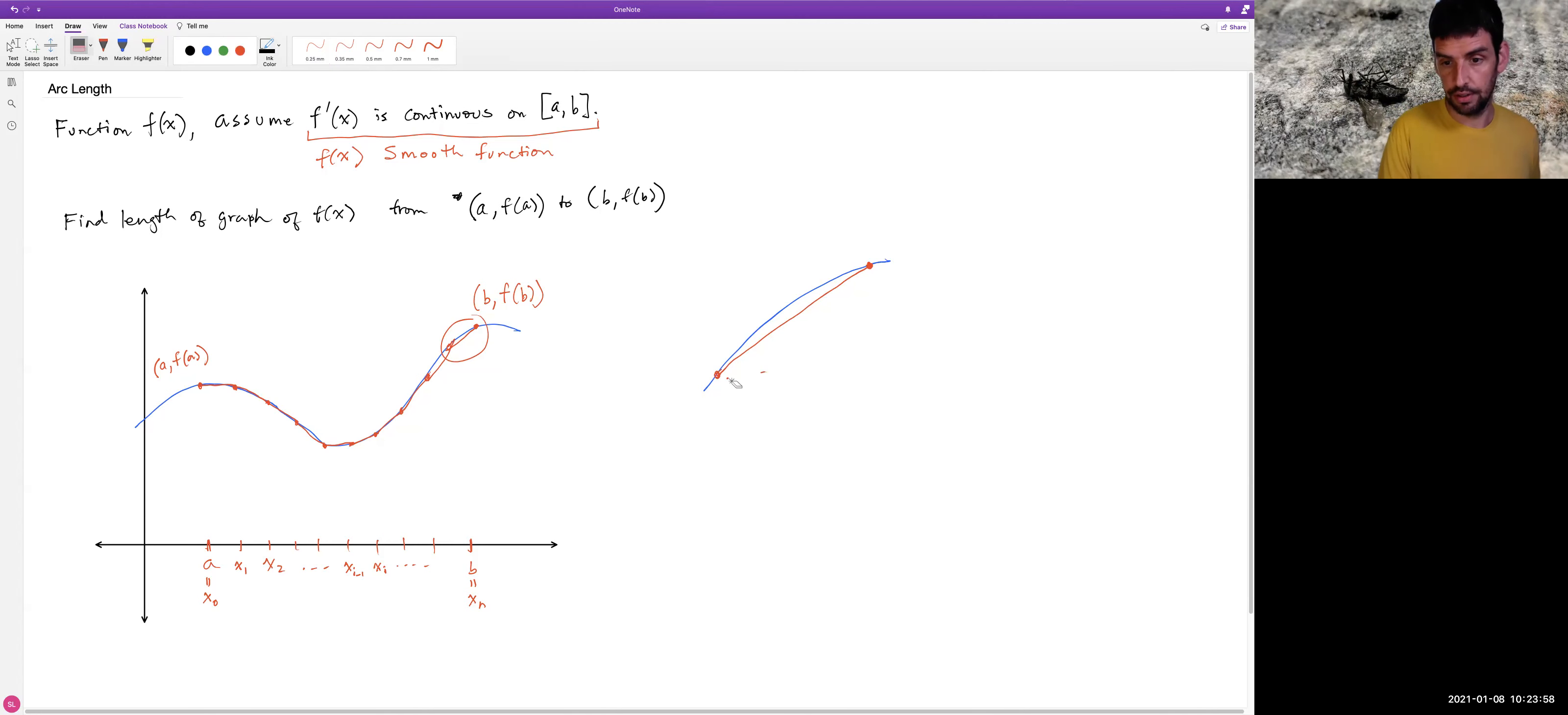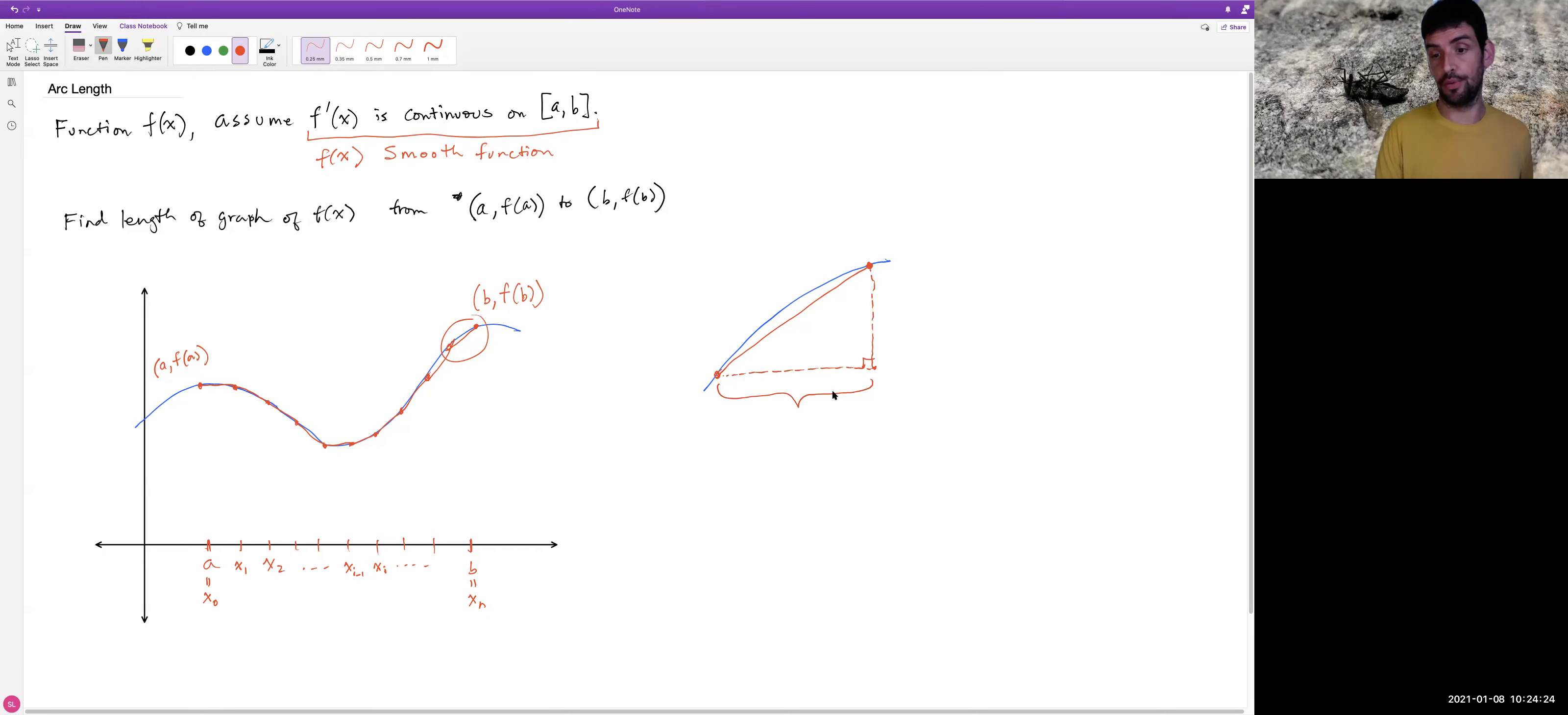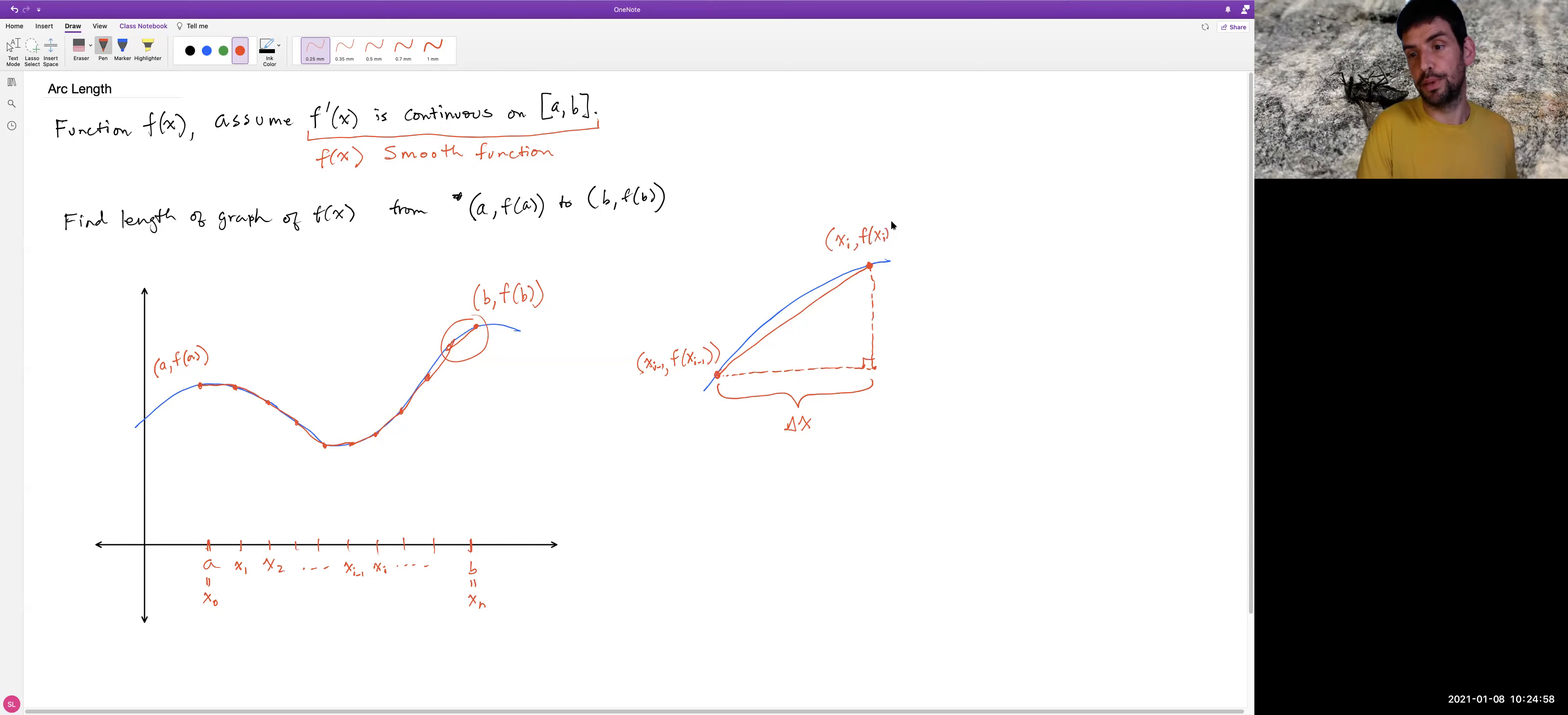So this is one of these subintervals. It might be this last one here or something like that. It doesn't matter. Any one of these. And you can imagine, unless the function happens to be a straight line at that point, that this straight line segment is not quite going to match. We can see that it's not exactly the same here. But it's still a good estimate. Okay, so here's what we can do. Let's make it a little nicer. We're going to use triangles. So if I imagine drawing a horizontal line from one point, vertical line from the other point, we get a nice little right triangle. And let's look at the lengths of these sides.